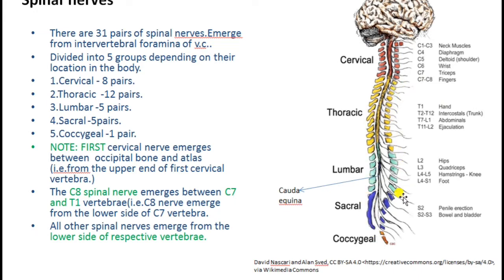The thoracic, lumbar, sacral, and coccygeal spinal nerves come out from the lower side of their respective vertebra — that is, they emerge from below the vertebra through the intervertebral foramina.